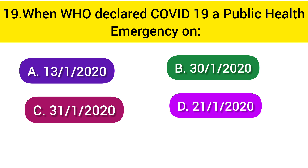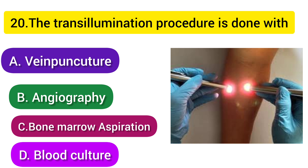Next question: When was COVID-19 declared a public health emergency? Option A: 13/1/2020, Option B: 31/2020, Option C: 31/1/2020, Option D: 21/1/2020. COVID started in January, and the declaration was made at the end of January. The correct answer is Option C - 31/1/2020.